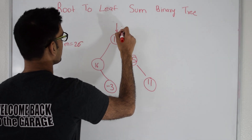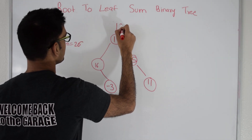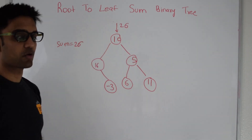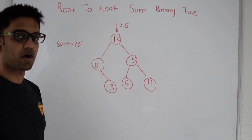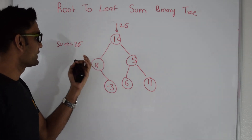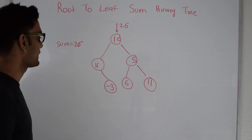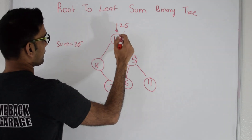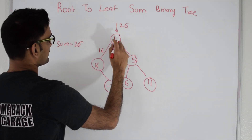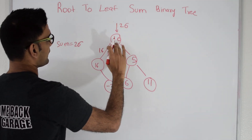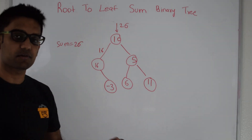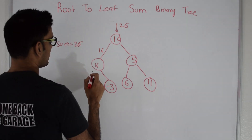We start from the root. We have sum 26. We check if this node is a leaf or not — it is not. So it will first try to go on its left side if it exists. On the left side it passes 26 minus 10, which is 16. It separates itself from the sum and whatever is remaining, it passes down the left side.